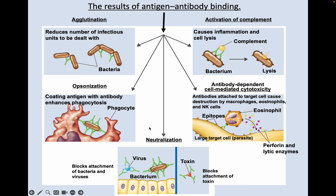Opsonization is coating an antigen with antibody, and this helps to enhance phagocytosis. The antigen is completely surrounded by antibodies, which makes it easier for the phagocyte to identify and engulf.